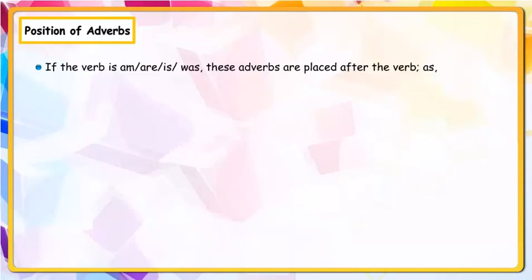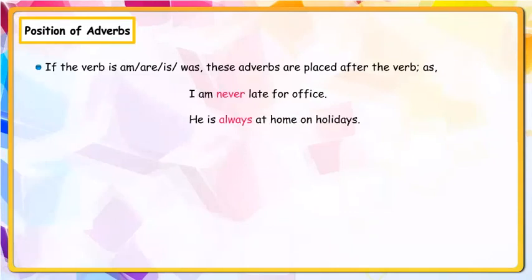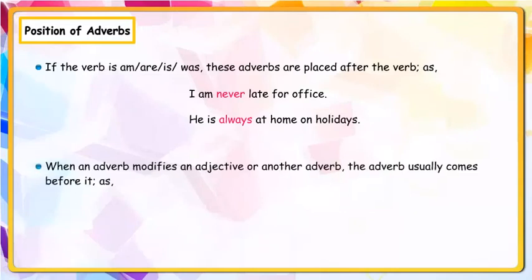Examples: He has never seen an elephant; We usually have breakfast at seven; My cousin has just gone out. If the verb is 'am', 'are', 'is', or 'was', these adverbs are placed after the verb. Examples: I am never late for office; He is always at home on holidays.